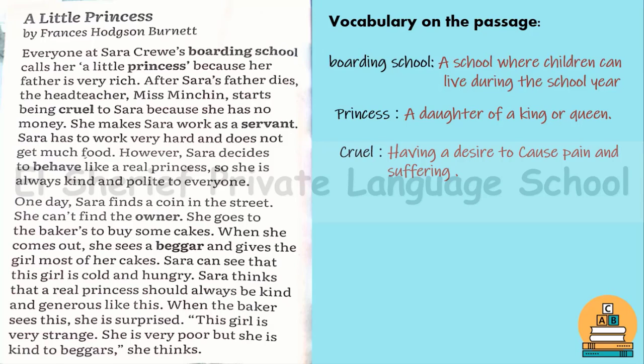Number three: 'cruel.' Cruel means having a desire to cause pain and suffering. For example: 'Don't be cruel to people.'